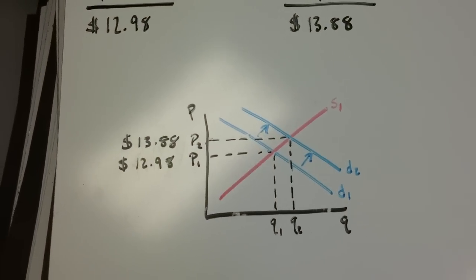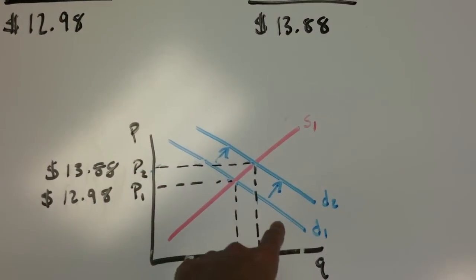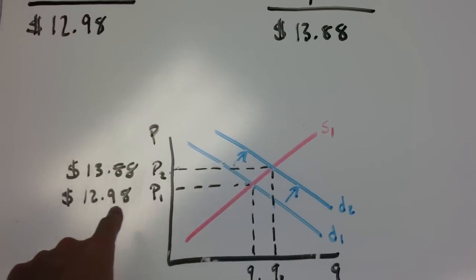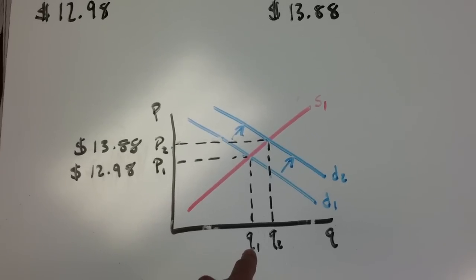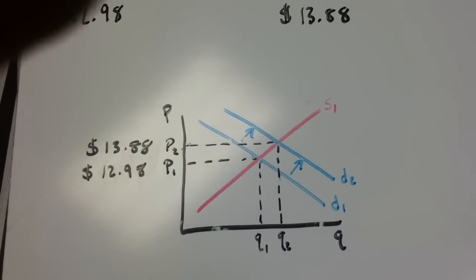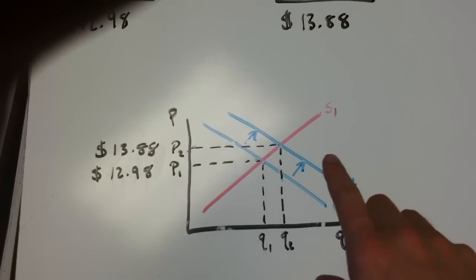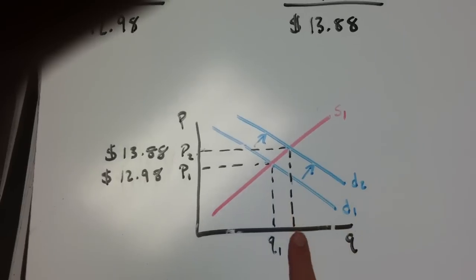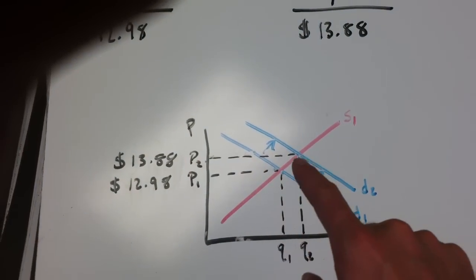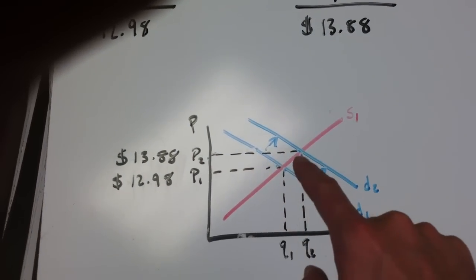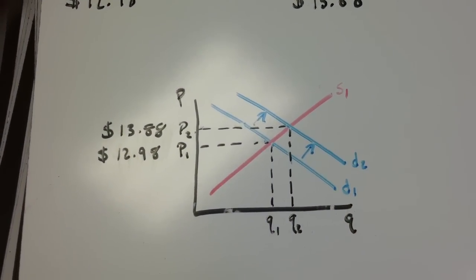The supply and demand economics of these boards may look something like this. We have demand curve D1 — P1 is our starting price at $12.98, and people were buying at quantity Q1 before teachers started really flipping their classroom. Now, because so many people went and bought these boards, the demand curve shifts to the right to D2, giving us a new equilibrium price of $13.88 and an increase in quantity to Q2.